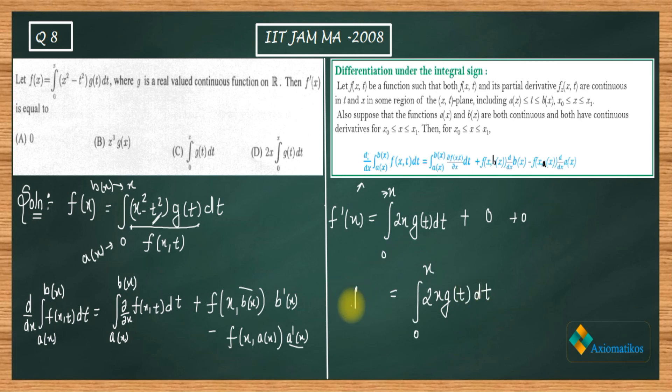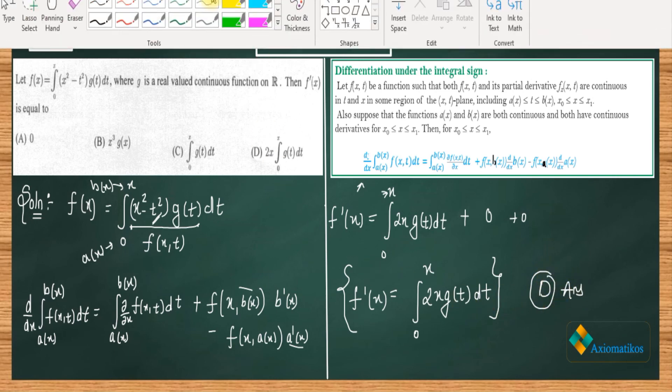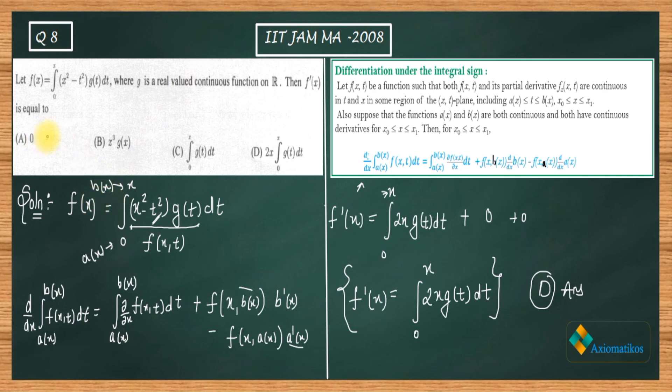So this is the derivative that we are getting. Which option is matching? It's option D that is matching, so D is your answer. So this one is incorrect, incorrect, incorrect, incorrect, and D is correct. Thank you.